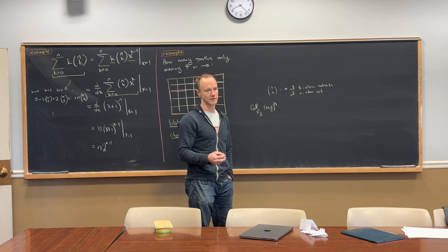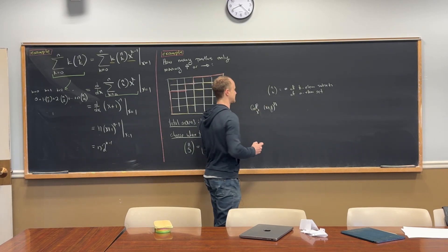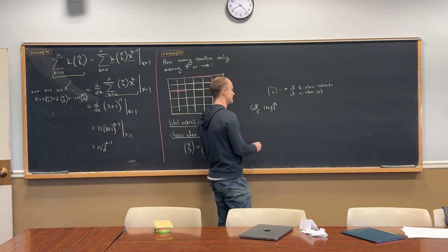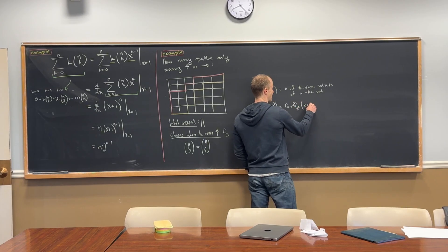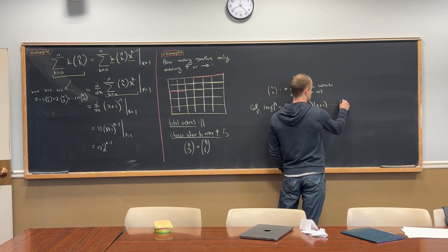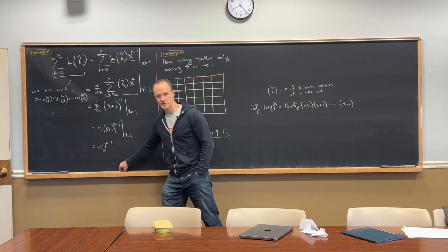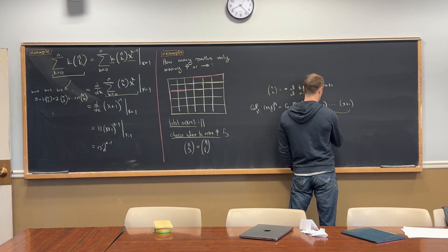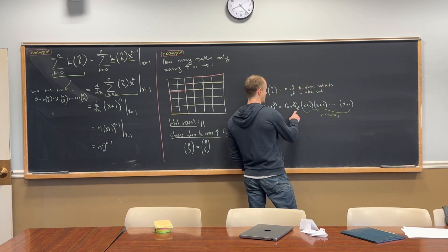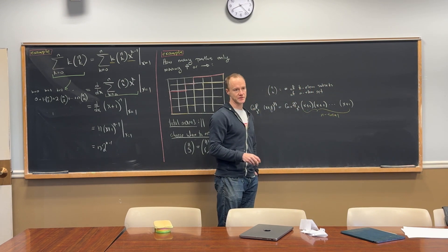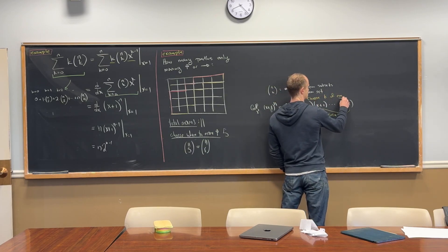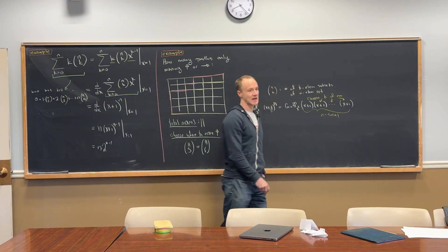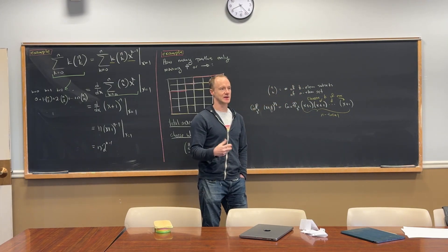Let's look at the coefficient of x to the k. In this product, the coefficient of x to the k from (x+1)(x+1)... all the way up to (x+1) — you have n of these. How many ways can you get x to the k? You choose k of them. You're choosing a k-element subset of an n-element set.